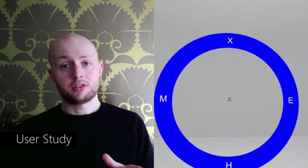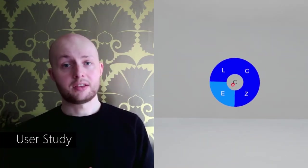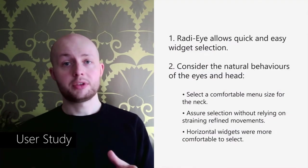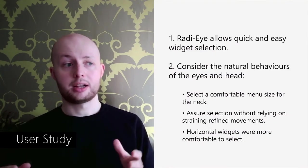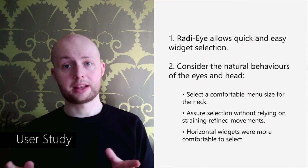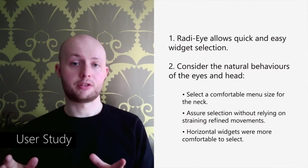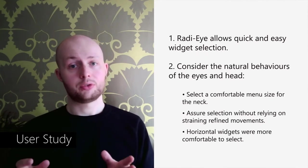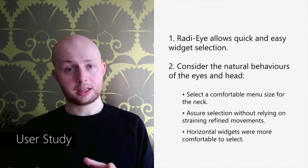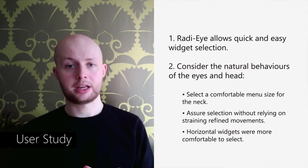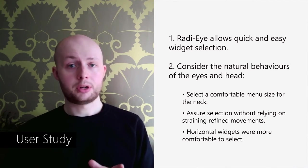We conducted a user study to see how radial properties such as menu size, widget amount, and widget direction affected Look and Cross selection performance and preference. Two key findings emerged: first, users were able to quickly and accurately select Radii widgets. Second, it is important to consider the natural behaviors of the eyes, head, and their coordination — including selecting a comfortable menu size for the neck, considering the combination of menu size and widget amount to assure easy selection without straining refined movements, and considering the direction of commonly used widgets, as horizontal widgets were more comfortable to select.